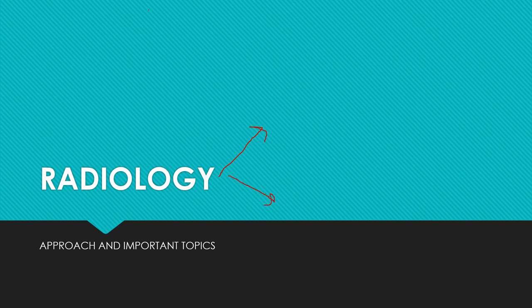Radiology is better divided into two parts: first being General Radiology and second being Systemic Radiology. My advice is that Systemic Radiology be dealt with topics from different subjects while you are studying them. For example, when you are reading Neurology, it is better to read the different aspects of Neuro-Radiology along with it. As we go on with the video, I will tell you the important topics in different aspects of Radiology and where they should be read from.